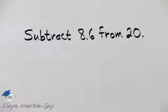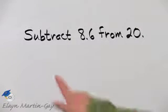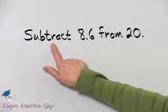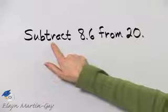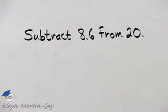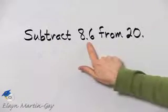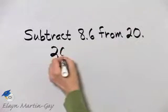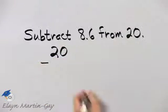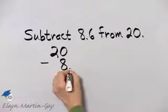Let's subtract 8 and 6 tenths from 20. Now don't forget, subtraction is not commutative. In other words, order matters when subtracting. So be very, very careful with the order here. We are subtracting this number from this number, so it's 20 minus 8 and 6 tenths.